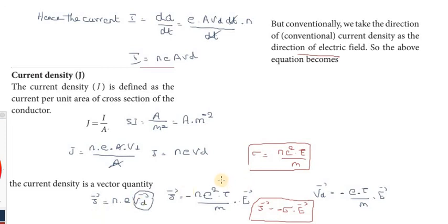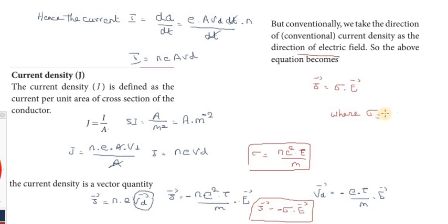The direction of current is opposite to the direction of electron motion. So j vector equals sigma into E vector, where E vector is the electric field, and sigma equals n into e squared tau by m. This sigma is called conductivity.